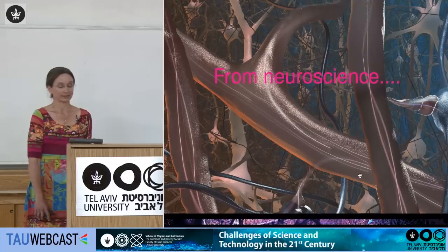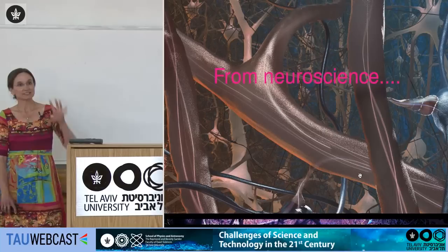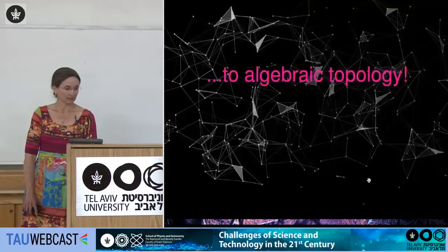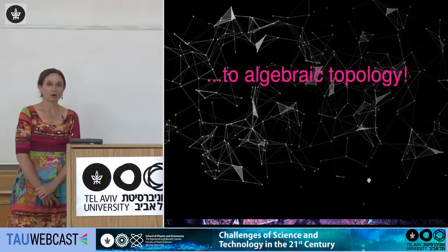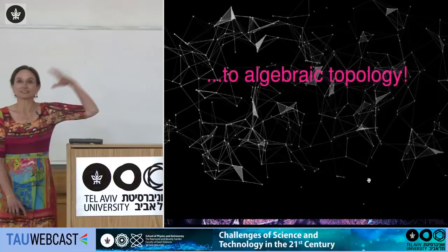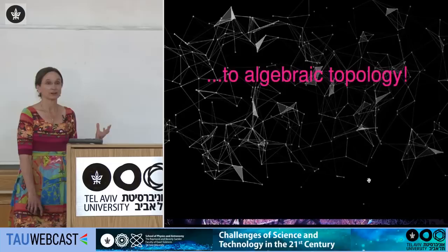What we want to do is come up with some simplification of this structure that still keeps enough information for a reasonable model but is still something we can analyze. I'll explain how we go from this very complex picture to algebraic topology — how a graph or constellation might capture important information about the structure and function of neurocortical microcircuits.